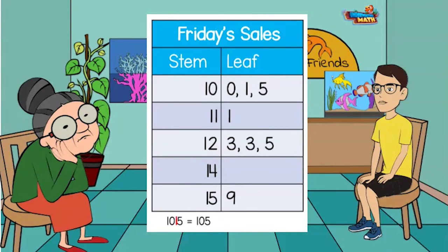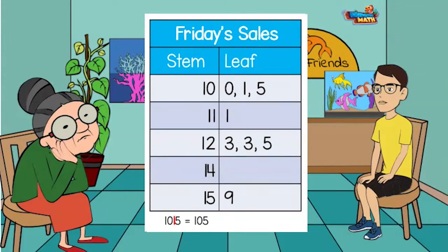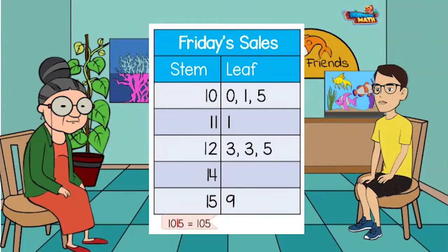Oh, this is so confusing. No worries, Mrs. C. I will explain. At the bottom of a stem and leaf plot, there is usually a key to explain what the stem and leaf represent. As you can see in our chart, when 10 — the stem — and 5 — the leaf — are combined, it equals 105.